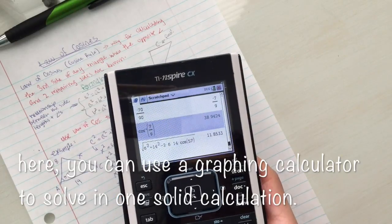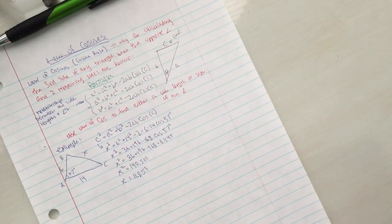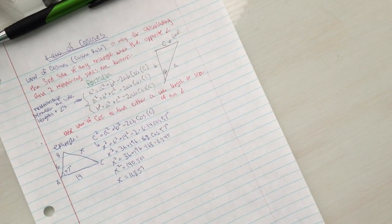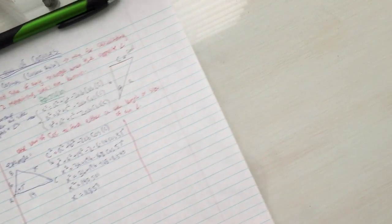Thus, if you square root x, x equals 11.853, which is the length of the third side.